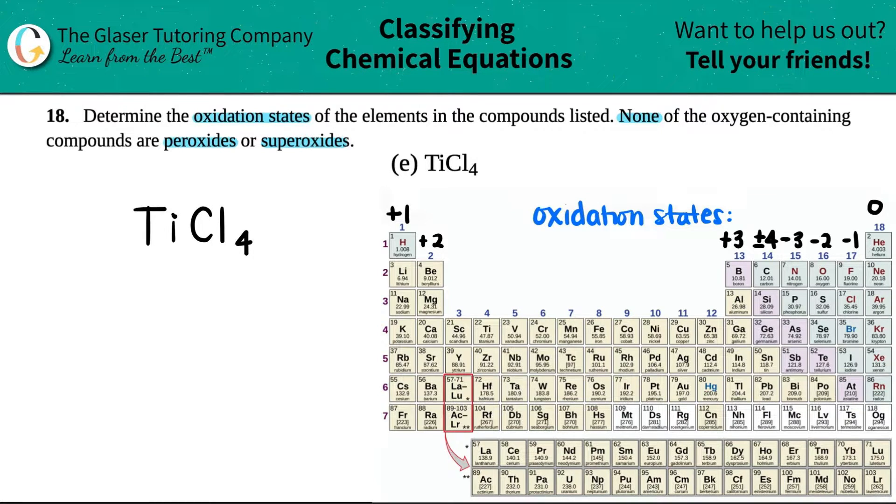So we're going to take our subscripts from our compound and crisscross them back up. So T-I, there was a secret one here, right? And then C-L-4. So I have my two subscripts. This one really was chlorine's number. This crisscrossed up to give me a negative one. And I say a negative because the element in the back is the negative charge. The one in the front is the positive charge. Not all the time, but 99% of the time. There's always exceptions in chemistry.